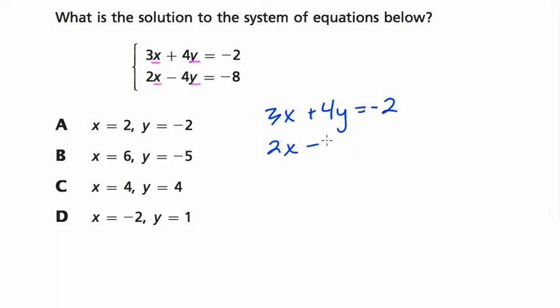Right, that's the first one. Here's the second one. And watch what happens. If I add these two, 3x and 2x is 5x. These two are opposites. They add to 0. Negative 2 plus negative 8, kind of scary, but it's just negative 10.